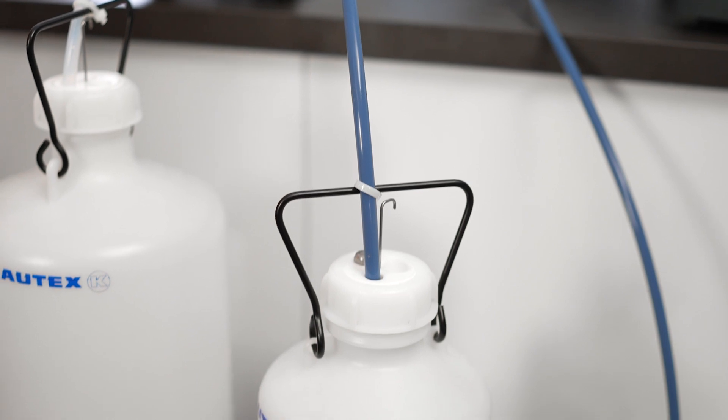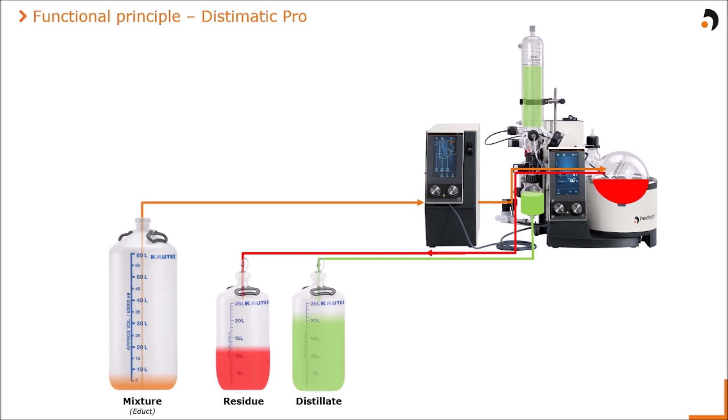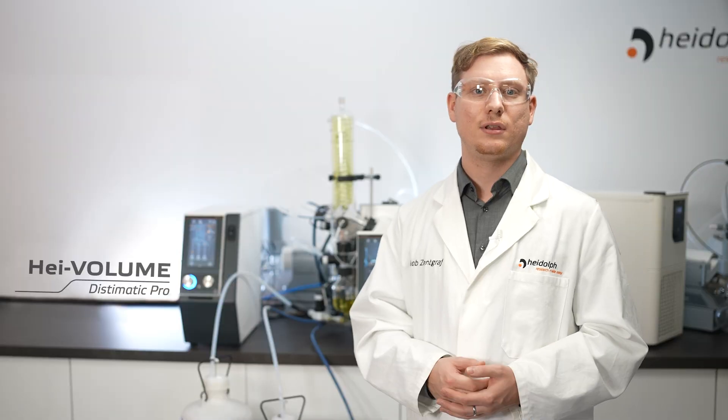Afterwards the system refills the evaporation flask with fresh mixture and starts the entire process again until the mixture vessel is completely processed and the liquids are separated. The big benefit is that no manual interaction is necessary to process even several liters of mixtures.